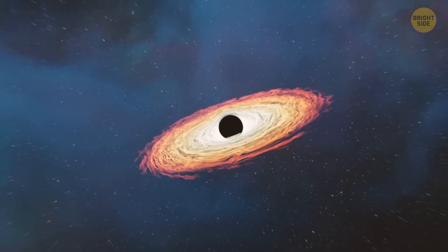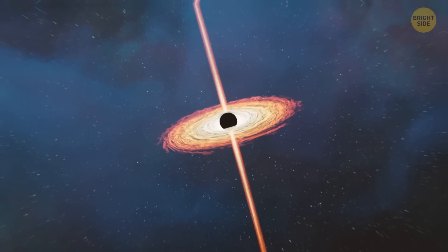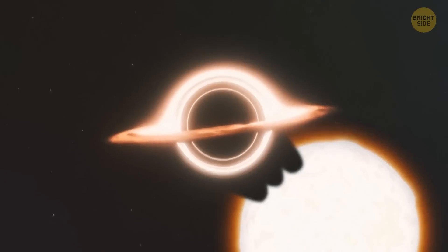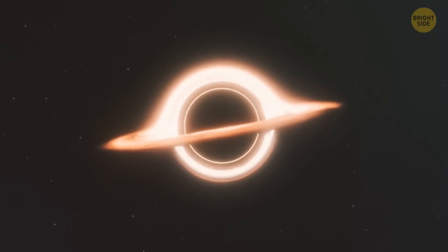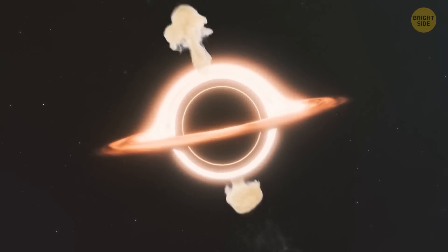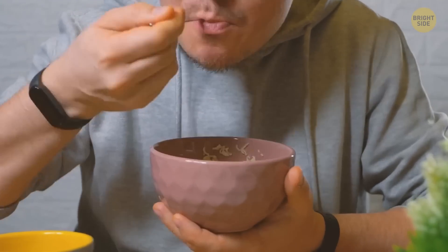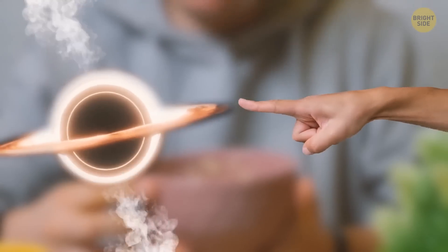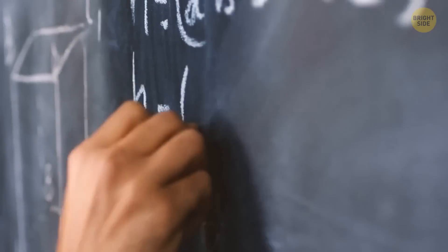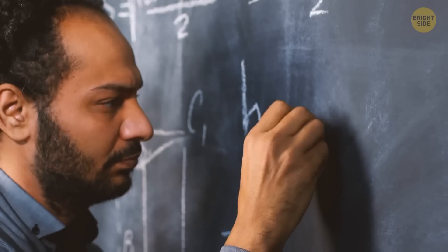And from its usual state, the accretion disk turned into an outflow. The black hole was eating too fast, then choked and burped the star's remnants. That's why you shouldn't rush while eating. Sounds funny, but that's the general idea. Again, this is only a theory, not the final answer.